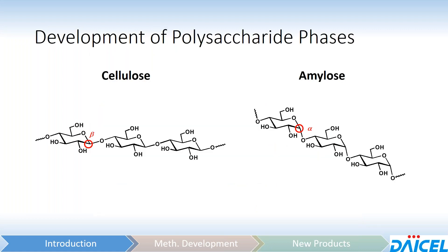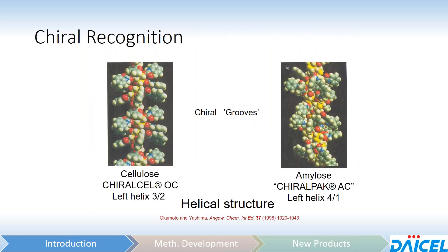As I mentioned, in some cases you've got a choice between cellulose and amylose as a polymer, the difference being in the way the glucose monomers are linked — a beta linkage in the case of cellulose and an alpha linkage in the case of amylose. If you look at the helical structures of ChiraCell OC versus ChiroPak AC, both still form the chiral grooves, but in the amylose version the chiral grooves are very different in terms of size and shape.